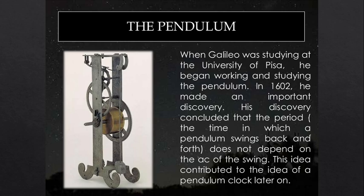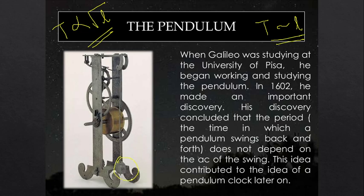Galileo made contributions not only in astronomy but also in mechanics. We have heard stories relating to the simple pendulum and the hanging lamps of the church. Galileo found that for a pendulum, its time period is only a function of length and does not depend on the mass of the pendulum. We now know it is proportional to 2π times the square root of L over g. While studying at the University of Pisa, Galileo began working on the pendulum, and in 1602 he concluded that the period does not depend on the mass of the swing but only on the length, which later contributed to the idea of the pendulum clock.